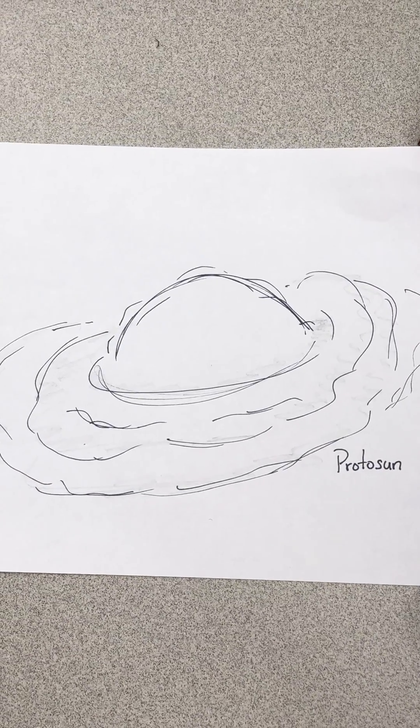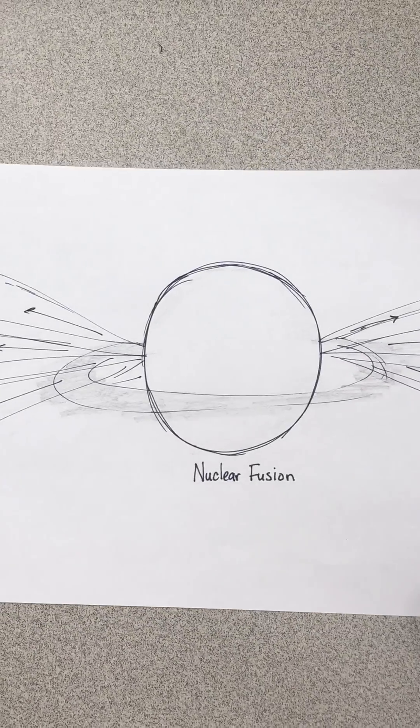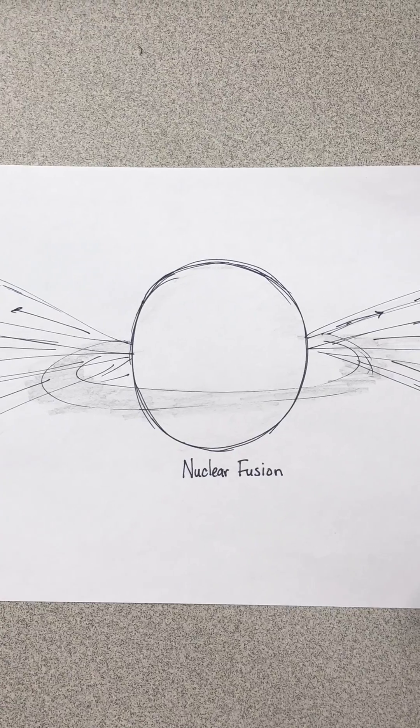Once it was large enough, gravity pulled it into a sphere. Then the proto-sun gathered enough energy to trigger nuclear fusion and our sun was born.